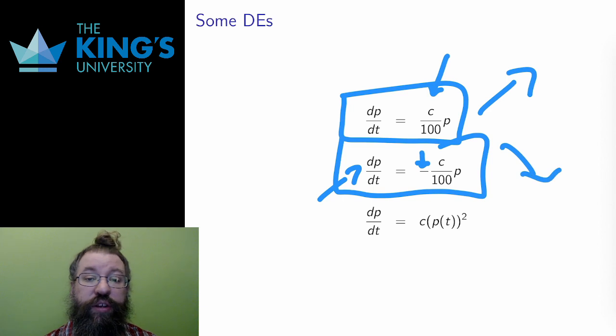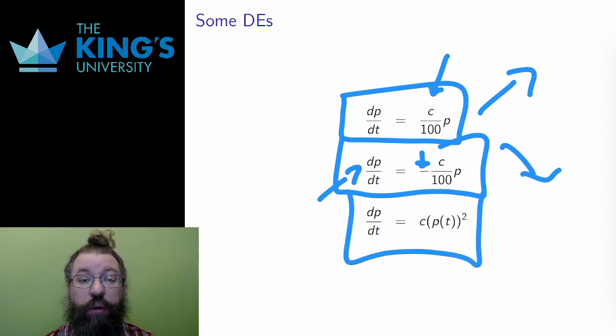The third equation here is an example of another relationship, one among many, since all of algebra can be brought to bear to make new differential equations. In this case, the growth rate is proportional to the square of the current population, instead of just a percentage.